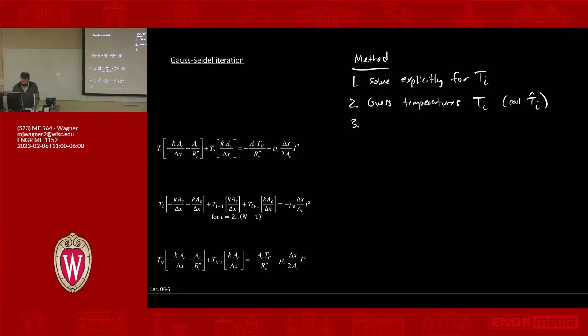So guess the temperatures for Ti. Step three is going to be compute new temperatures using step one, and then four is check error against tolerance. Very vague, hard to understand what I'm saying. So let's go through an example.